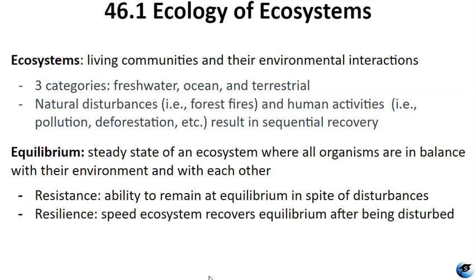As you know, oceans cover a very large portion of the earth with both shallow and deep water ecosystems. Freshwater ecosystems include lakes, rivers, and springs, which also support a variety of life. Terrestrial ecosystems are highly variable as well, as we learned in lesson 9 when discussing the characteristics of terrestrial biomes.